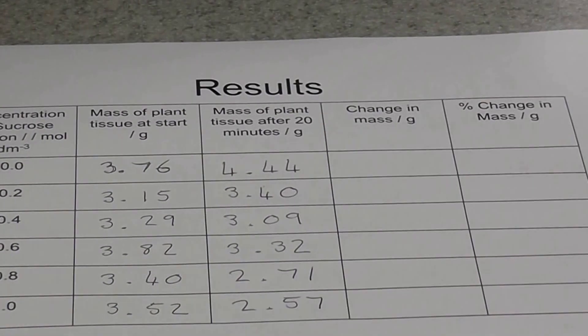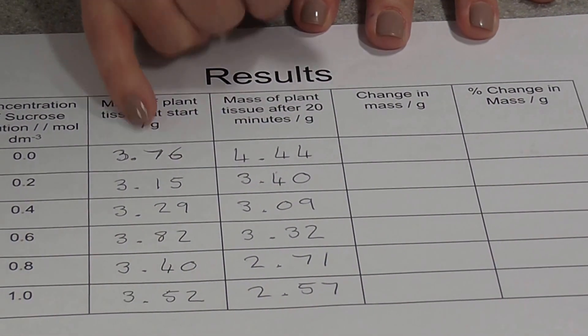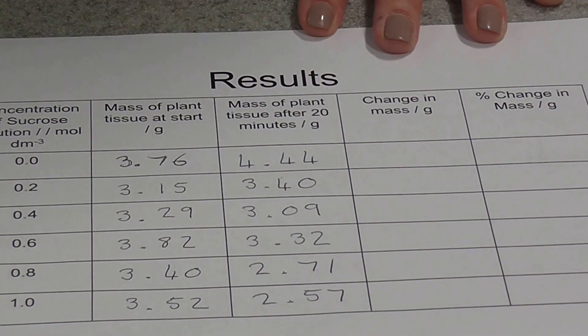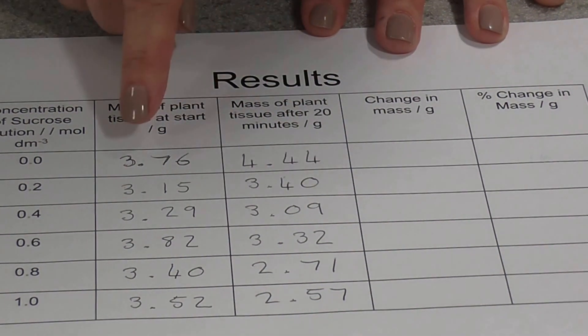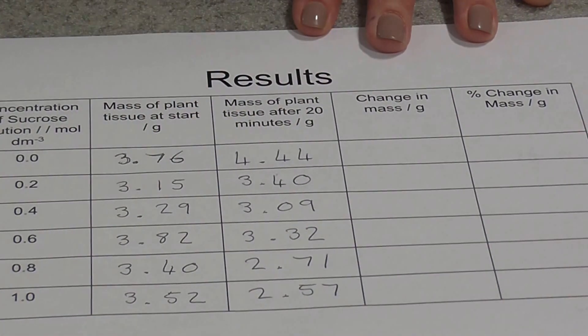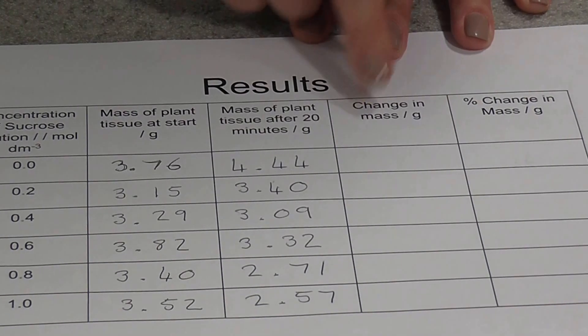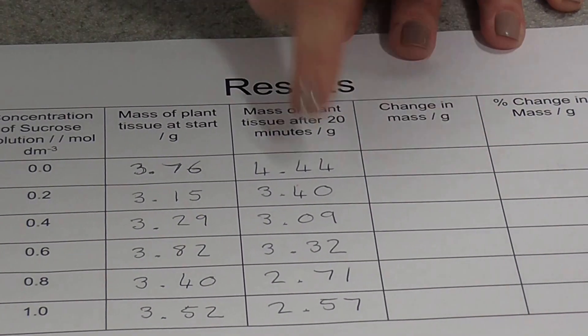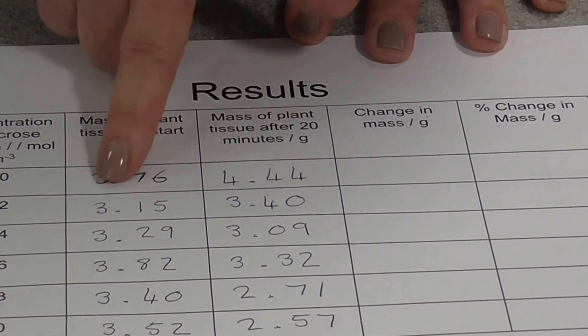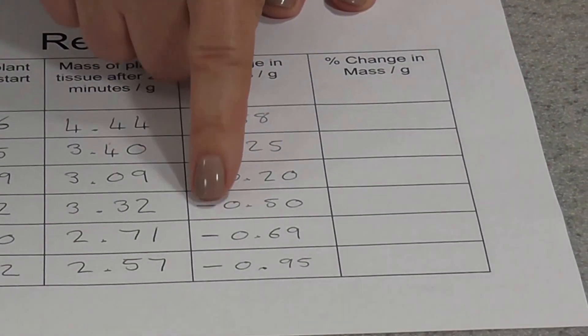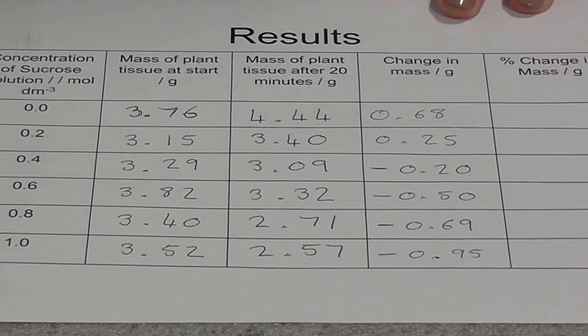And then you're going to reweigh them. And again, I have done this. So let's have a look at the results here. If we look at these, these are the weights at the beginning, the mass at the beginning. This is the mass of each chip after 20 minutes in the different solutions. We can actually see that some of the chips have gained mass, others have actually lost mass. Now we now need to calculate the change in mass of each chip, which is obviously the difference between the two values. Make sure when you record these results that you actually record a minus for any where they have lost mass.